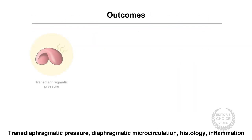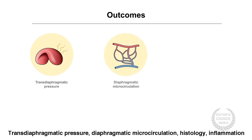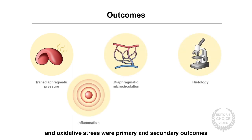Transdiaphragmatic pressure, diaphragmatic microcirculation, histology, inflammation, and oxidative stress were primary and secondary outcomes.